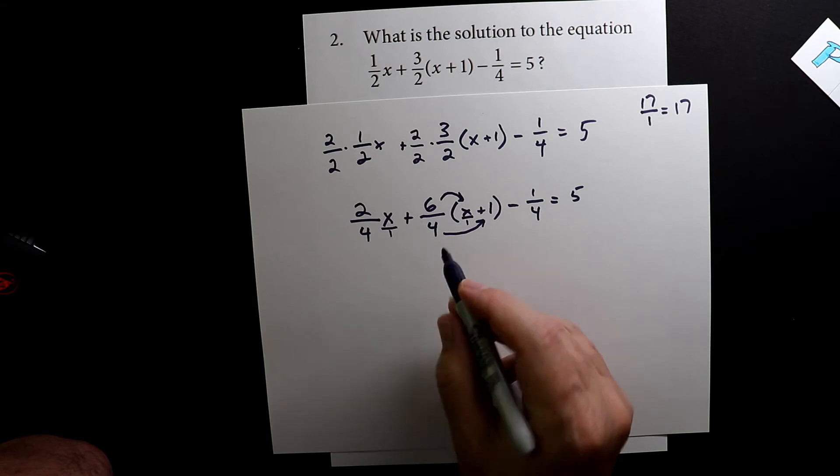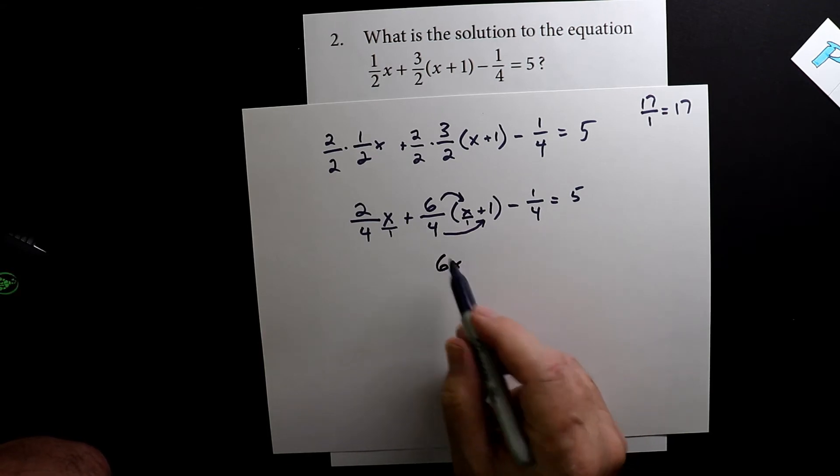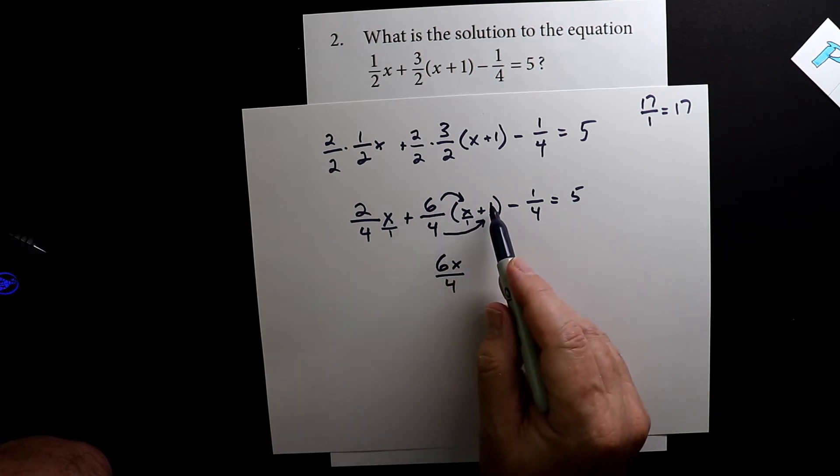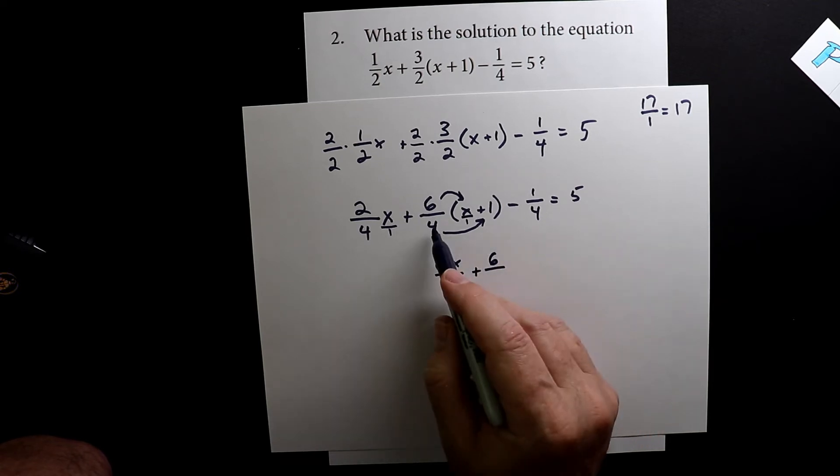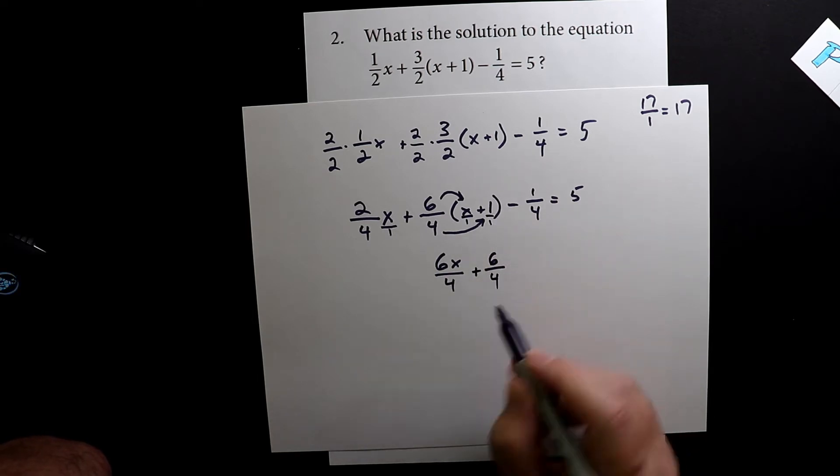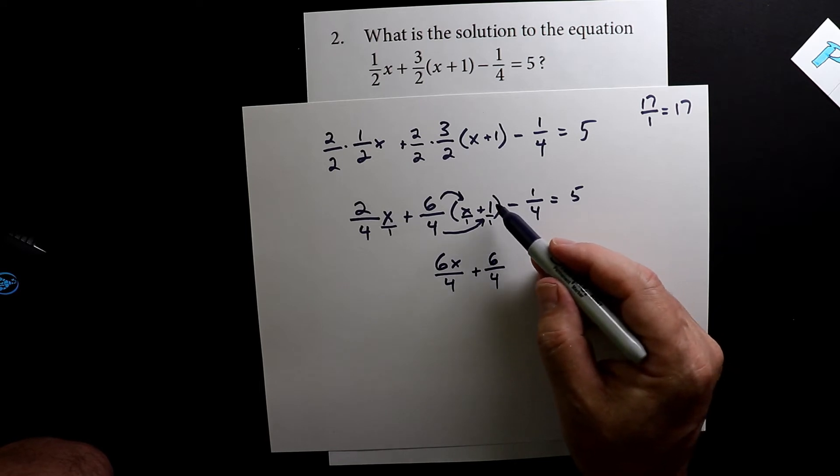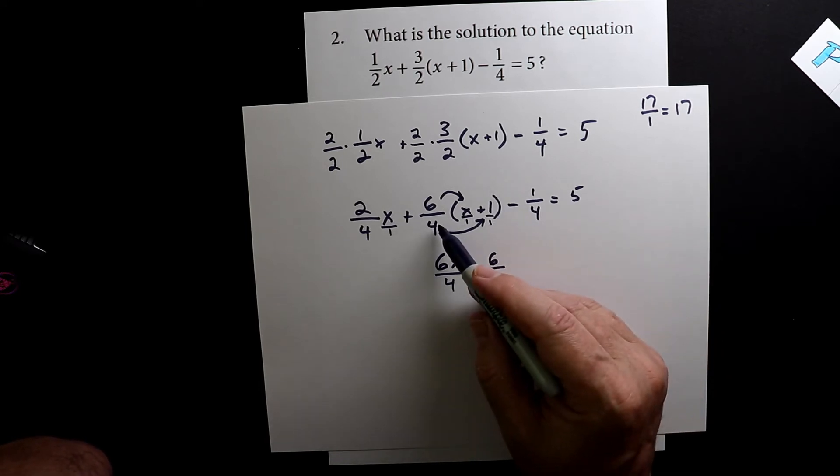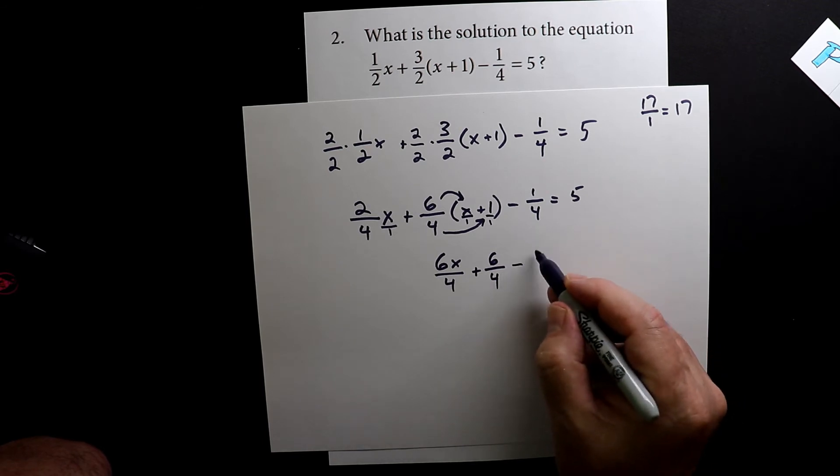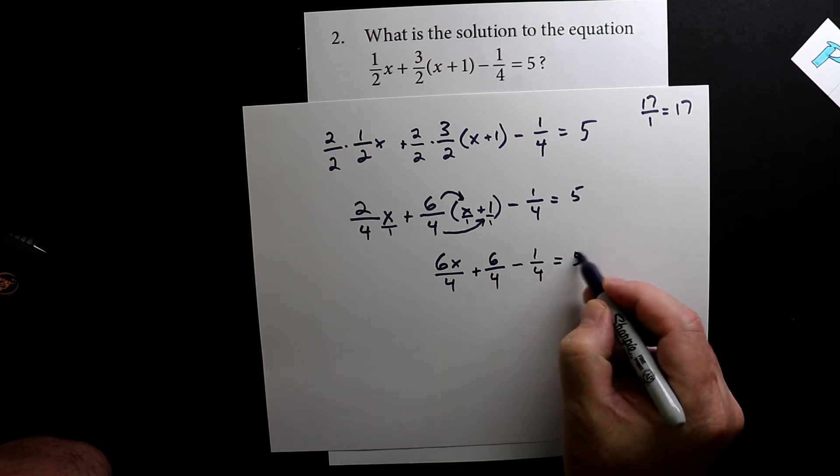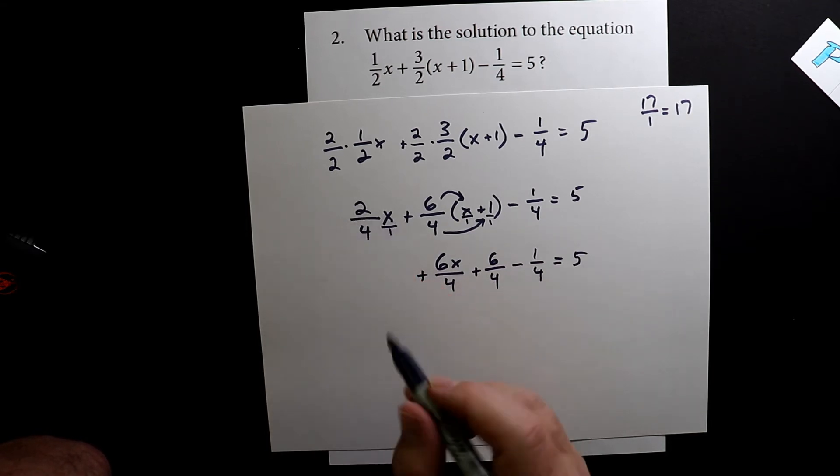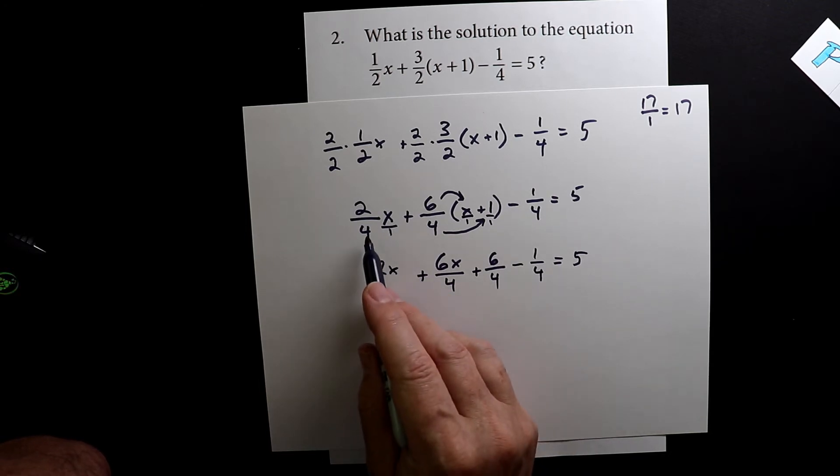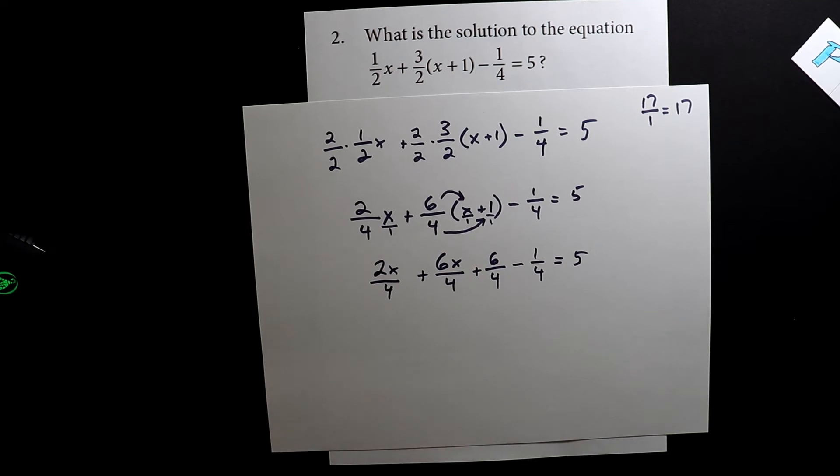So I'm going to distribute these so I can get rid of these parentheses. Six times x is six x over four times one, which is four. And then we have six times one is six, and then on the bottom four times one is four. So six over four times one is six over four. It didn't change the value at all. Now I'm going to bring this one over four straight down. We're going to remember that it all equals five. Now the last thing I need to do is multiply this. So two times x is two x and then four times one is four.